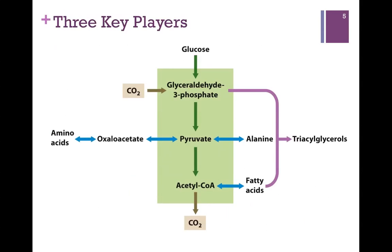How do these three key players fit into multiple pathways? As illustrated here, the green shaded box indicates they're all breakdown products of glucose. If we're an organism that can fix carbon, we can take CO2 and actually build a glyceraldehyde-3-phosphate molecule, rather than catabolize it from glucose. We can also take glyceraldehyde-3-phosphate and convert it to a triacylglycerol for an anabolic pathway. Pyruvate, a breakdown product of glycolysis, can be converted directly to the amino acid alanine, or converted to oxaloacetate and used to build other amino acids. Acetyl-CoA can be fully oxidized to CO2, or converted to fatty acids to make triacylglycerols. These very common intermediates feed into and from multiple pathways.